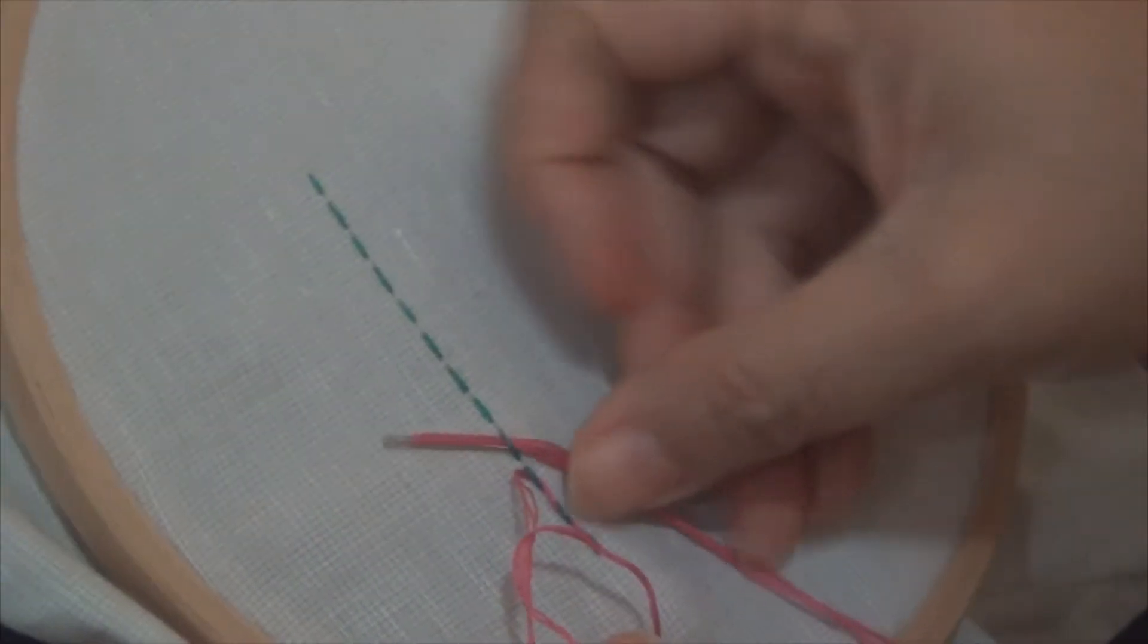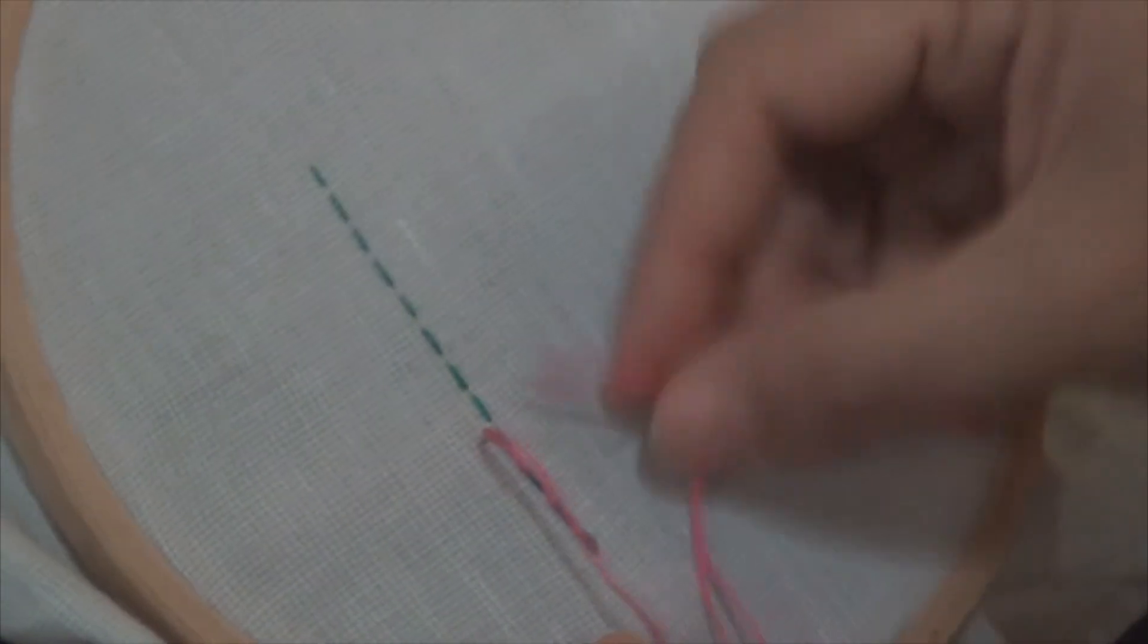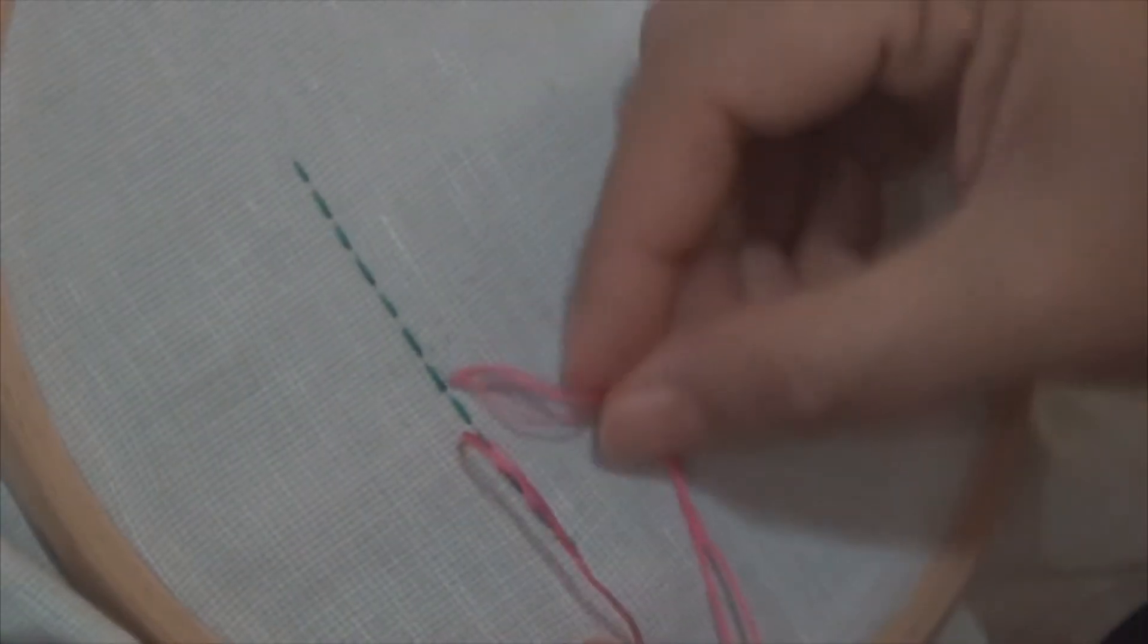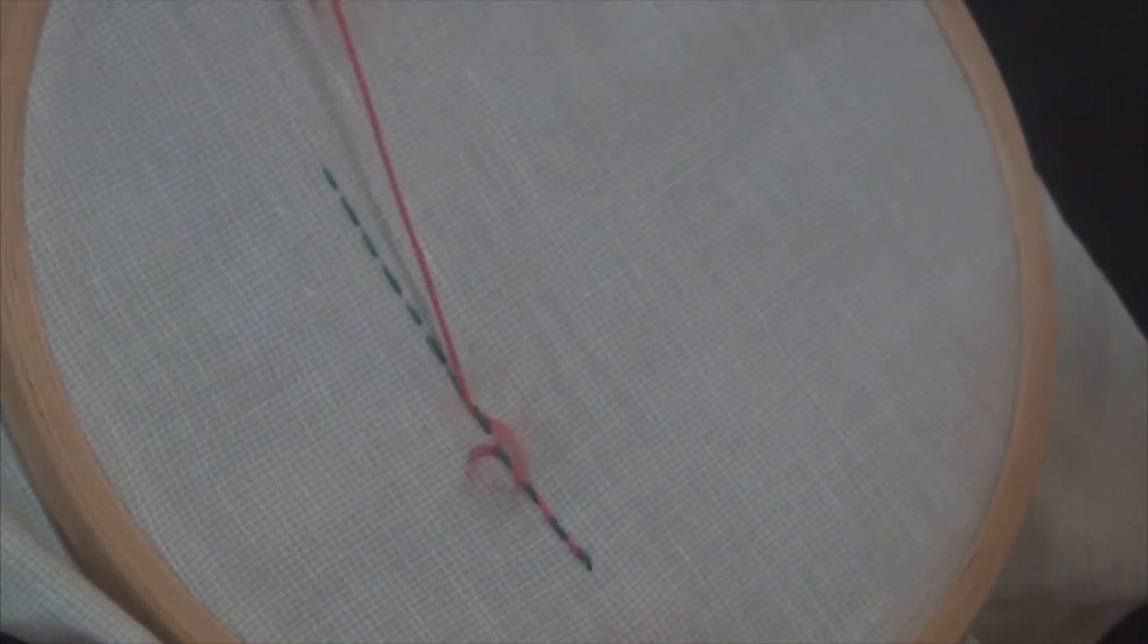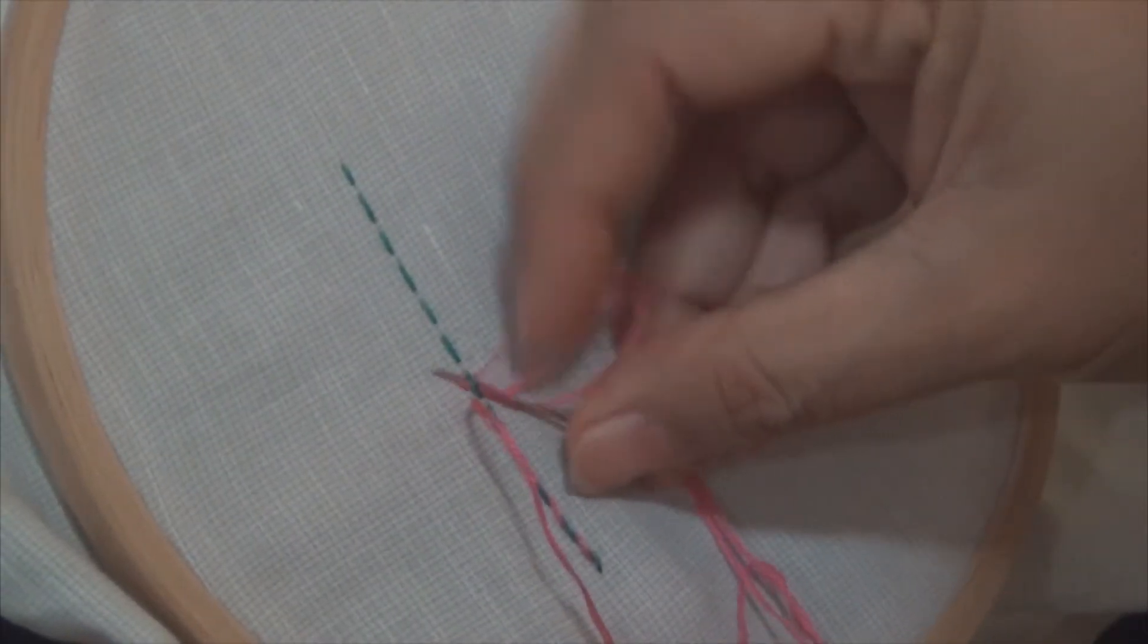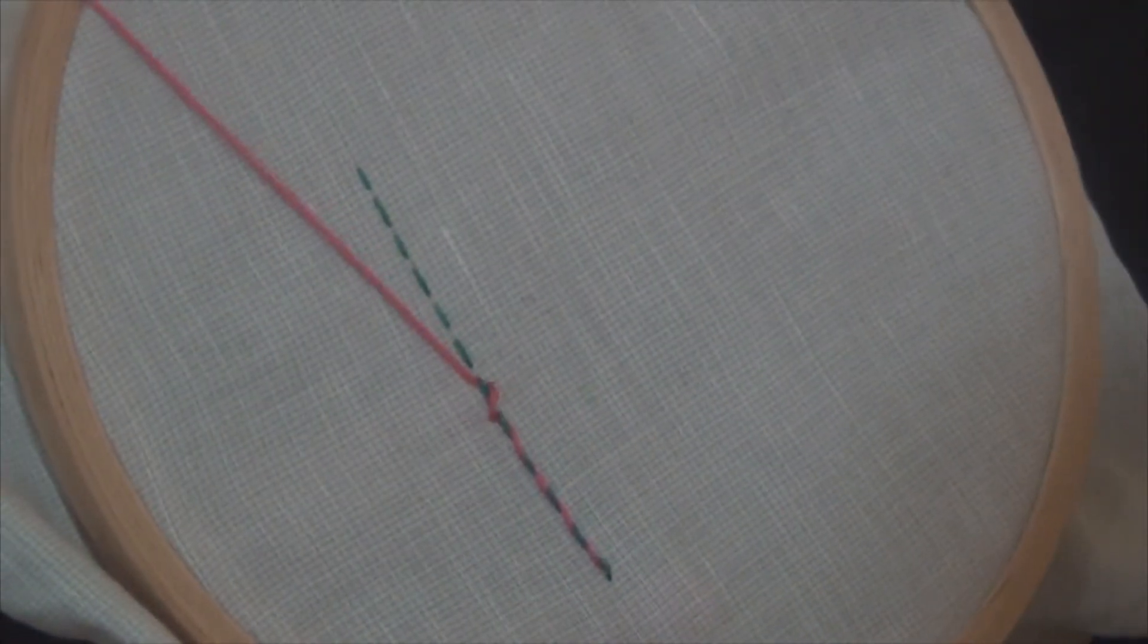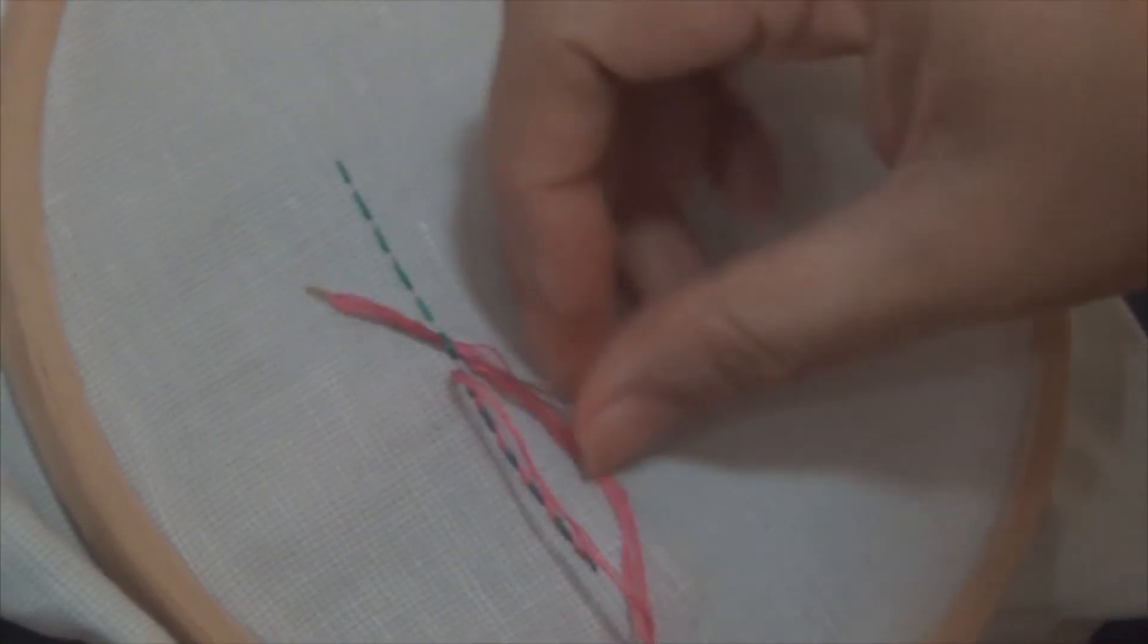Can you see the pink thread is winding around the pre-existing green stitches. This makes the stitch look very colorful and beautiful and it works very well when we have to write alphabets.